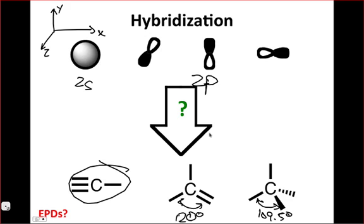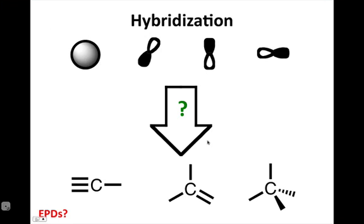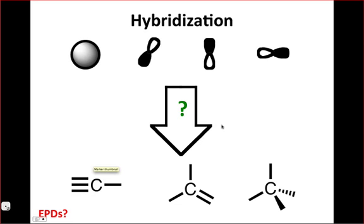So to start things off, I wanted to propose a question to you about the number of electron pair domains in each of these structures. I'll give you a second to think about it. For those of you hanging around, if you want to throw an answer in the chat box, that's fine for each one. So let's call them A, B, and C from right to left. And we're looking at the number of electron pair domains about the carbon atom.